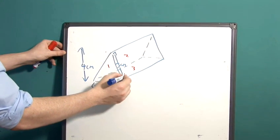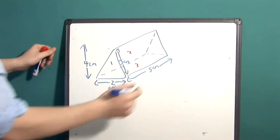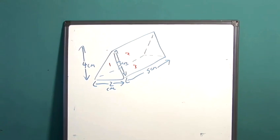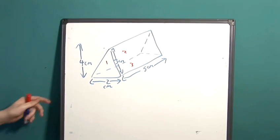and finally a length of five centimetres. This is all the information we need. First of all let's work out the area of the surface one.